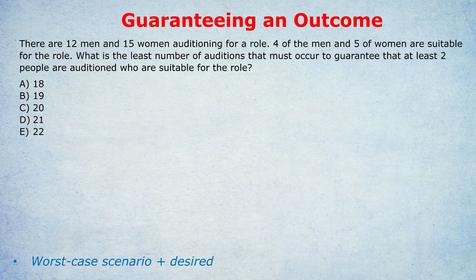This is the type of question you might get. There are 12 men and 15 women auditioning for a role. Four of the men and five of the women are suitable for the role. What is the least number of auditions that must occur to guarantee that at least two people who are auditioned are suitable for the role?